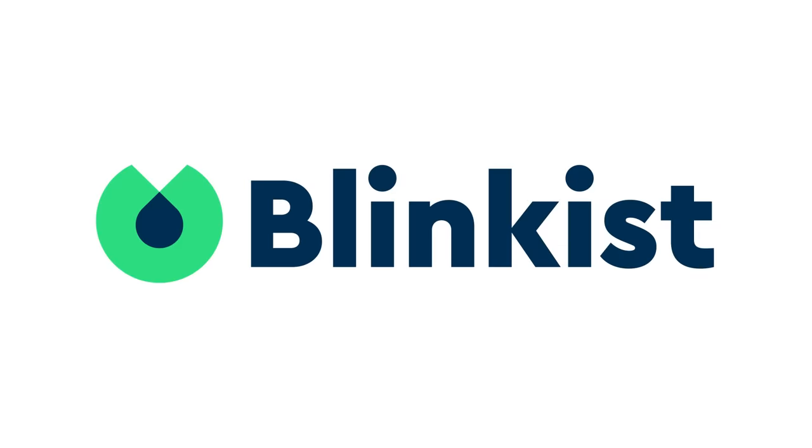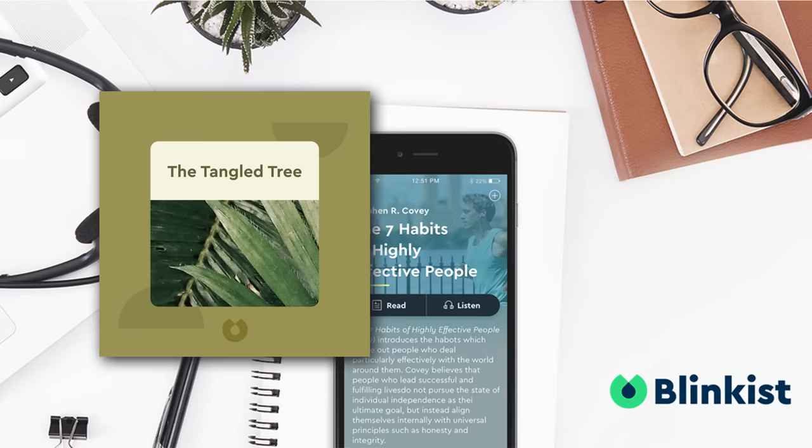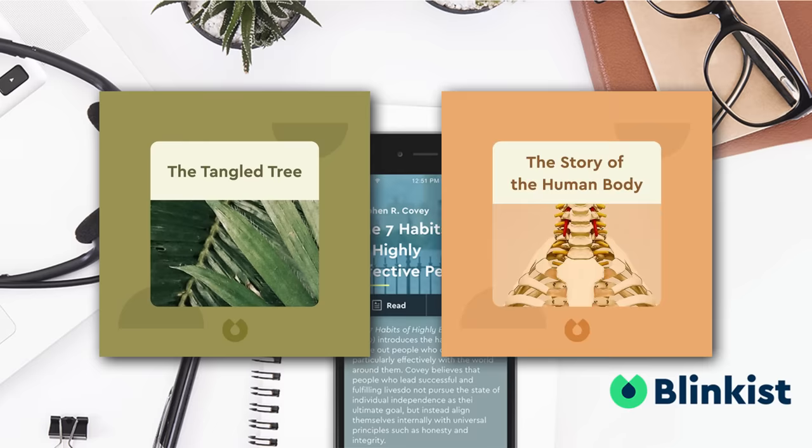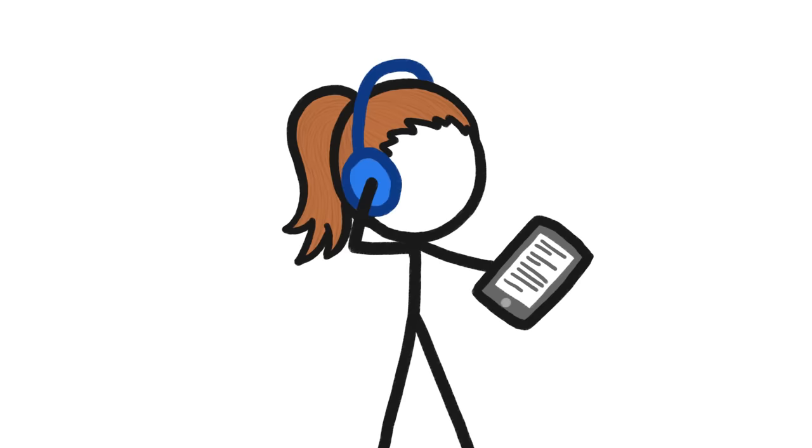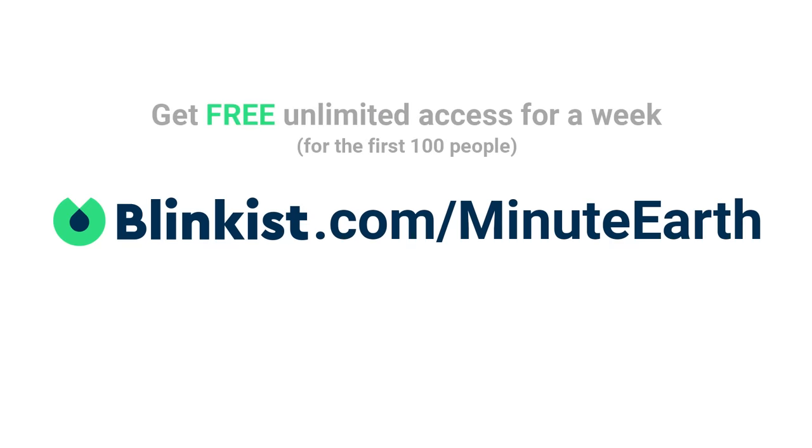Luckily, I found Blinkist, who sponsored this video. Blinkist creates 15-minute summaries of thousands of nonfiction books, like The Tangled Tree, which explains why our understanding of evolution keeps, well, evolving. And the story of the human body, which traces the evolution of humans right down to our modern-day achy backs. You can read or listen to these summaries, and as someone with a fair amount of experience condensing lots of knowledge into small packages, I can say they're pretty good. The first hundred people to click on the link in the description, Blinkist.com slash MinuteEarth, can get unlimited access to the app for a week to try it out for free. And if you want the full membership, you can get 25% off. That's Blinkist.com slash MinuteEarth.